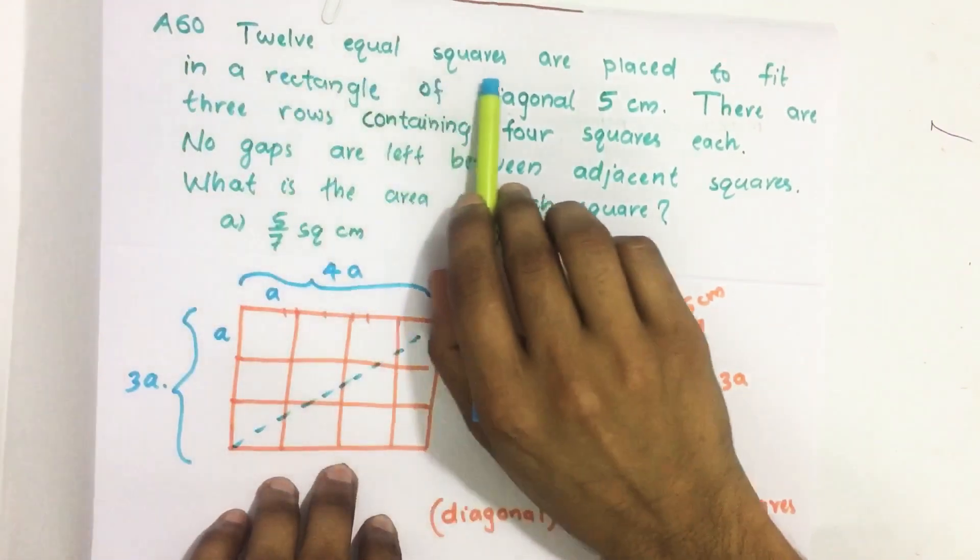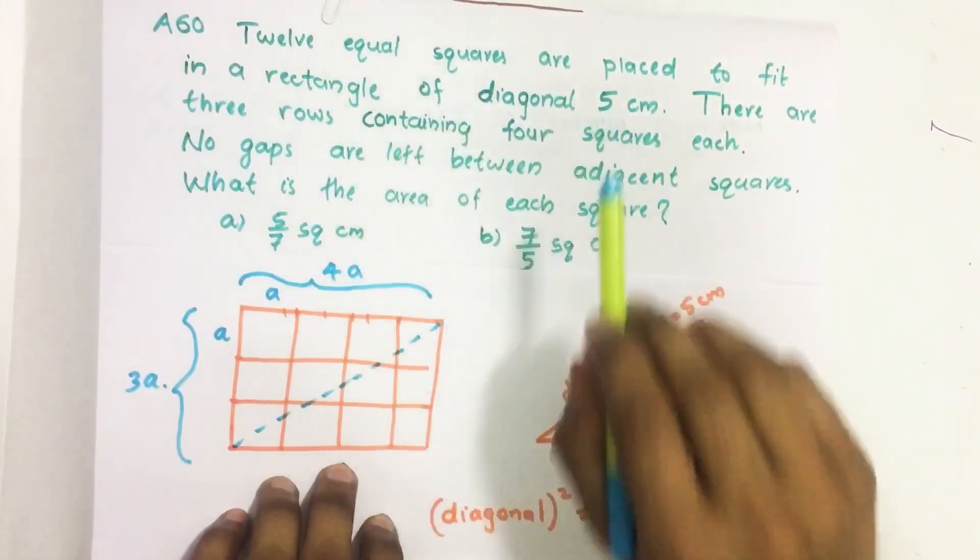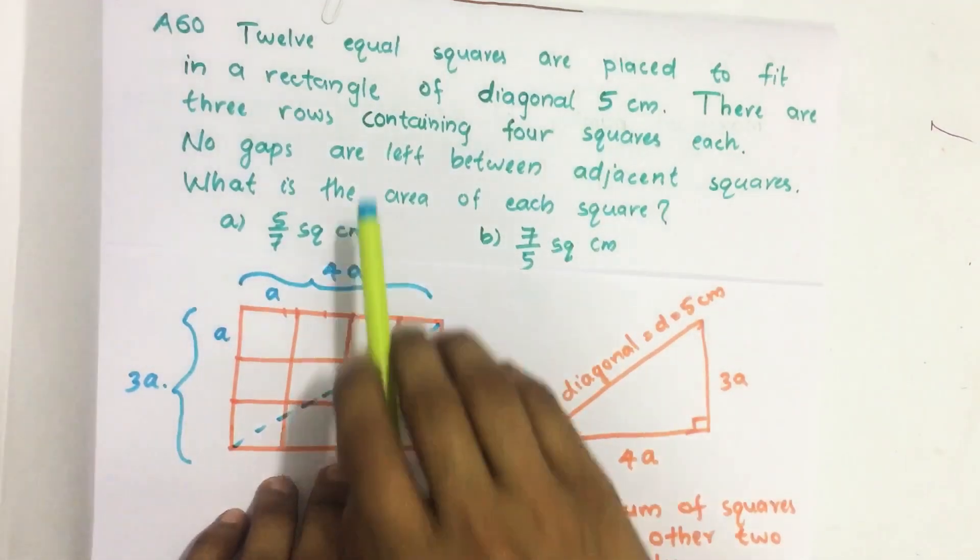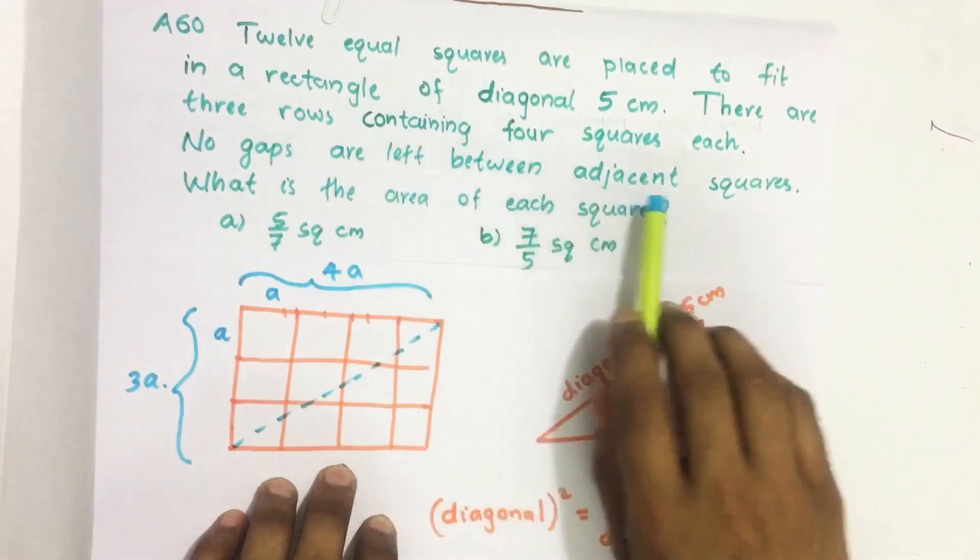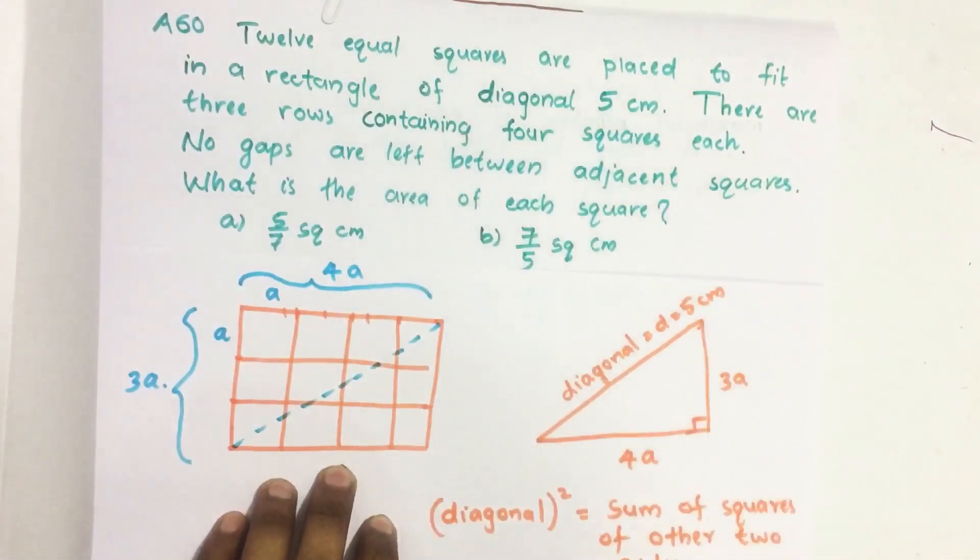12 equal squares are placed to fit in a rectangle of diagonal 5 cm. There are three rows containing four squares each. No gaps are left between adjacent squares. What is the area of each square?